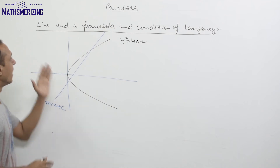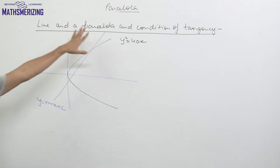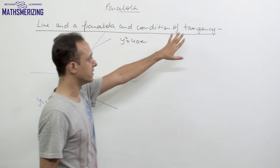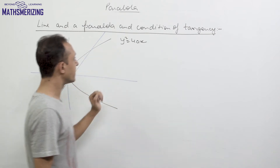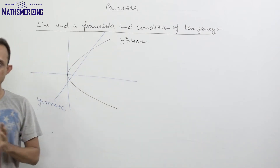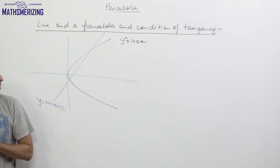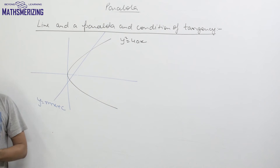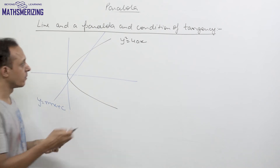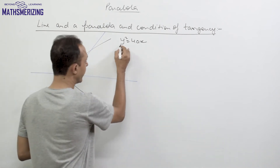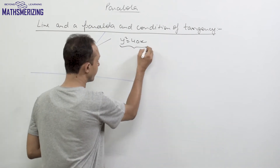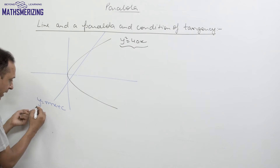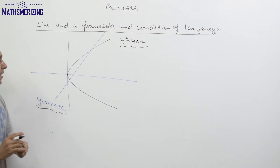In this video we will discuss a line and a parabola and its condition of tangency. This method is very general and can be used for any general second-degree conic. Suppose we have the parabola y² = 4ax and the line y = mx + c.